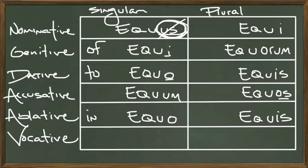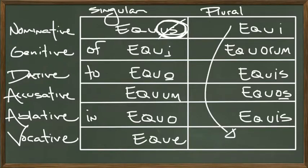So if we wanted to say hey horse, come here, got some water for you, eque. Eque. Alright, and then over in the plural it's just the same as the nominative, equi. If you're calling all the horses.